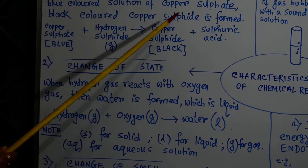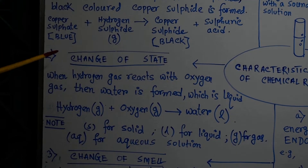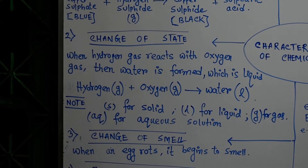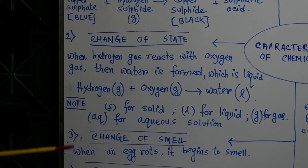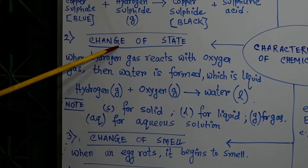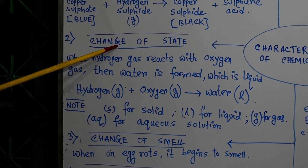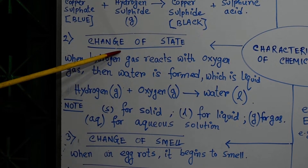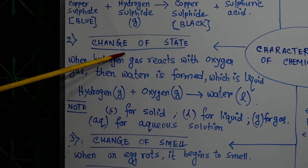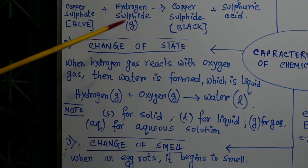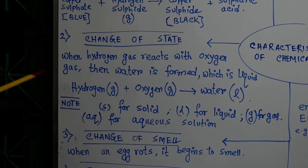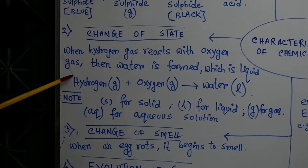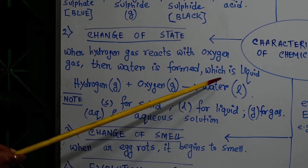The next characteristic is change of state. There are some chemical reactions characterized by the change of physical state of the reactants — the reaction might start with a particular physical state and end up with another physical state. For example, when hydrogen gas reacts with oxygen gas, water is formed, which is liquid.